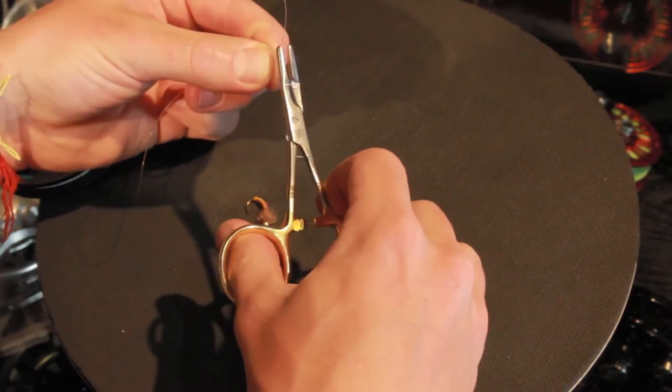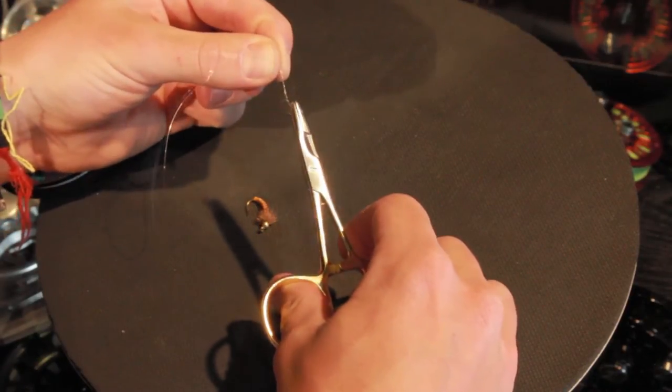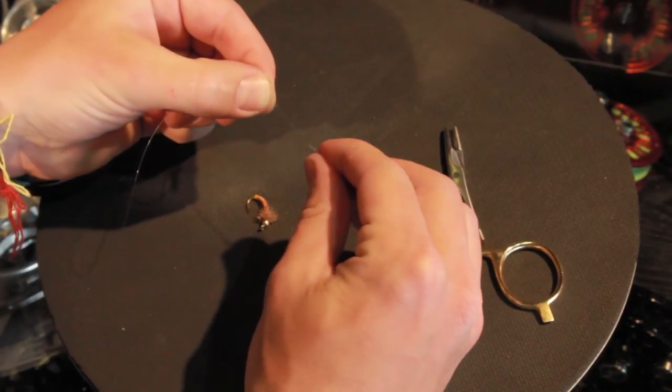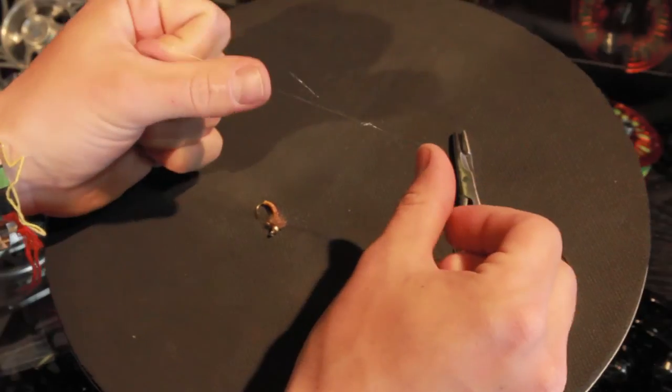Open the hemostats and grab the tag end and pull it through. Moisten the knot and cinch it down. Just clip off your tag ends and you're good to go.